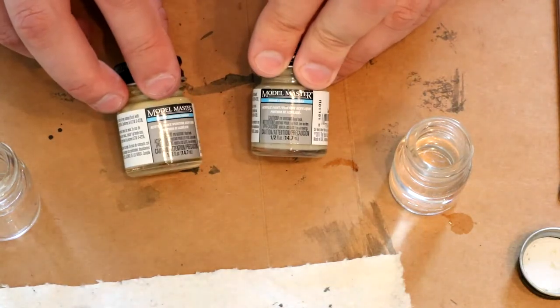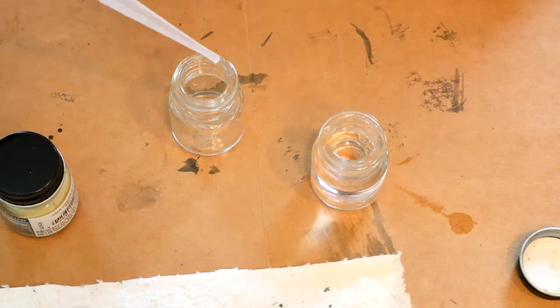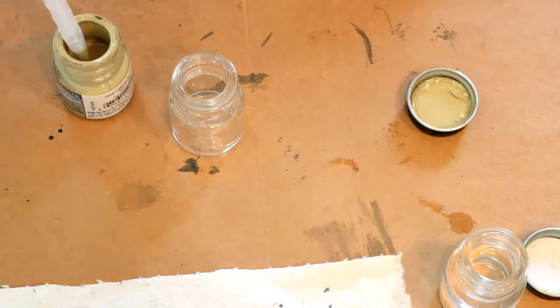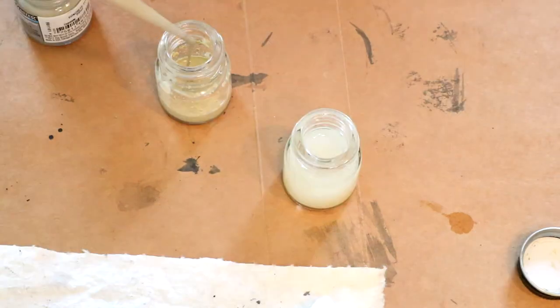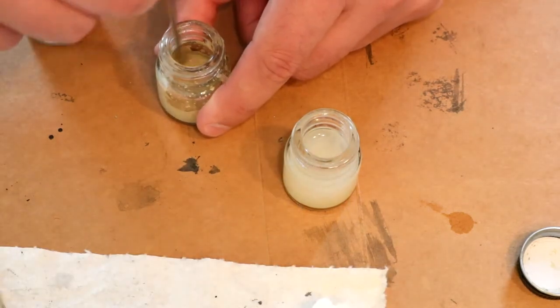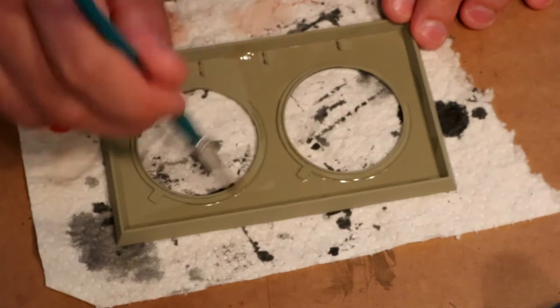I decided to mix the Model Master's concrete flat and aged concrete flat for a slightly different shade. Once thoroughly mixed, I used my airbrush to paint it. I was happy with the color and then went about weathering it.